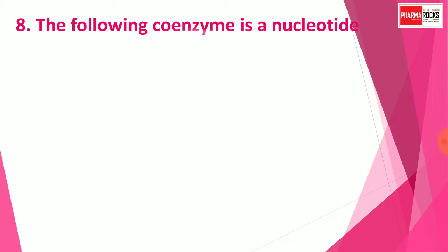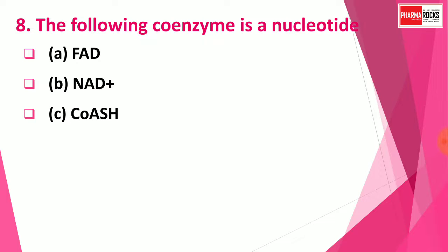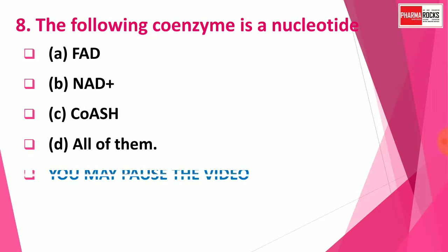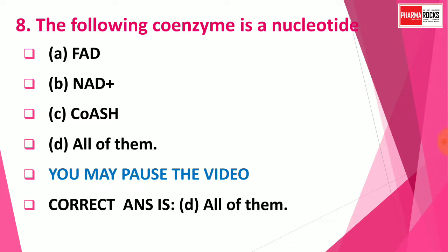Question number 8: The following coenzyme is a nucleotide — Option A: FAD, Option B: NAD+, Option C: CoASH, Option D: All of the above. You may pause the video. The right answer for this question is Option D: All of them. The coenzymes FAD, NAD+, and CoASH are all nucleotide-type coenzymes.